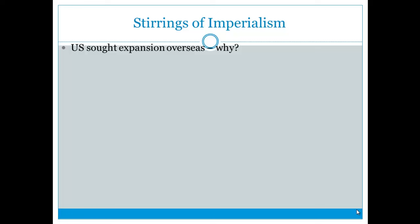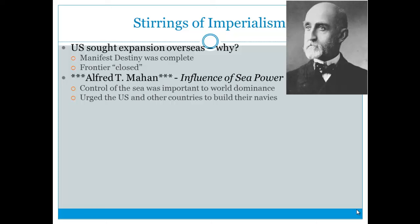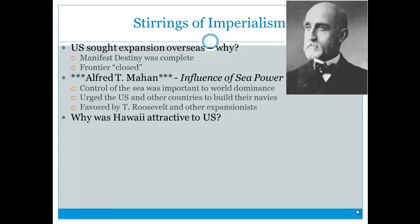Now shifting to foreign issues and imperialism: the U.S. wanted to expand overseas. Manifest Destiny was complete — the U.S. had the entire continent coast to coast and was running out of room. The frontier was declared closed in 1893 with Frederick Jackson Turner's Frontier Thesis. Alfred T. Mahan's book The Influence of Sea Power argued that control of the sea was important to world dominance, urging the U.S. and other countries to build up their navies — hugely favored by Teddy Roosevelt and other expansionists.